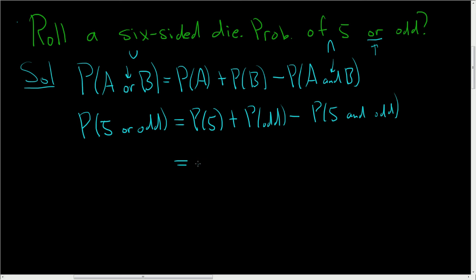All right, so let's think about it. We need to figure out the probability of rolling a five on a six-sided die. That's the number of ways to roll a five divided by the number of ways to roll the die. There's one way to roll a five, right?